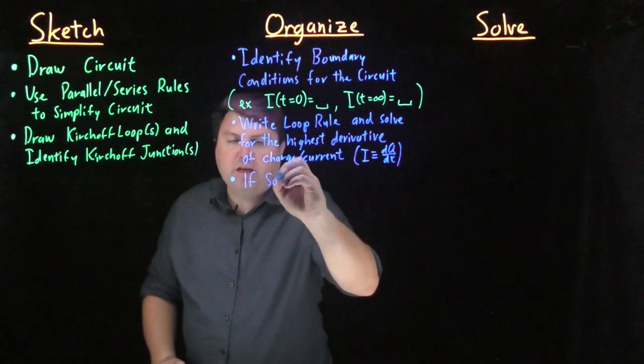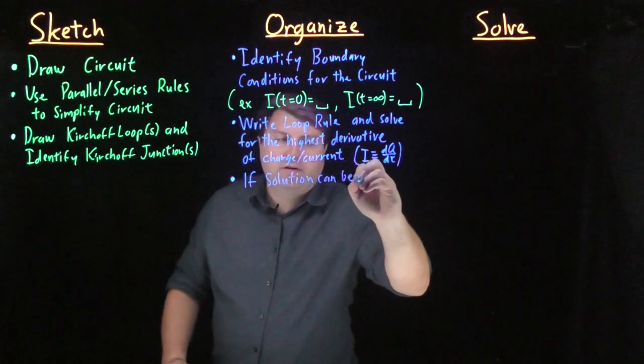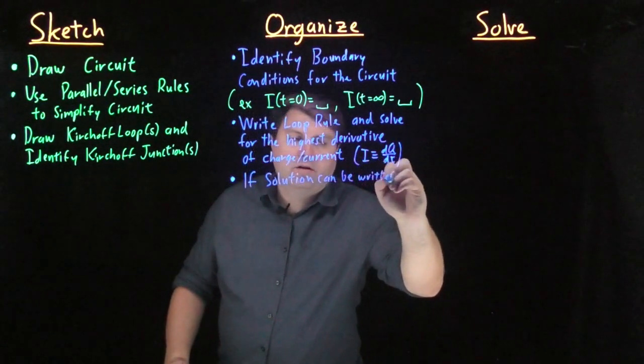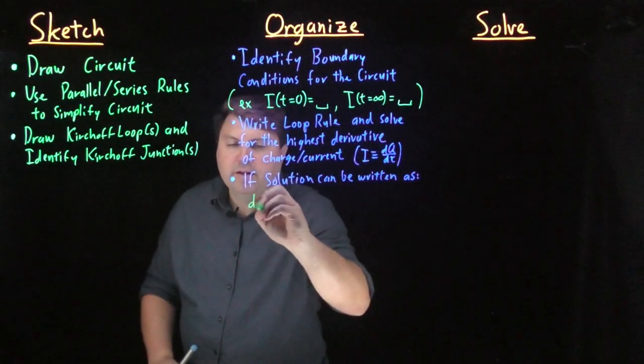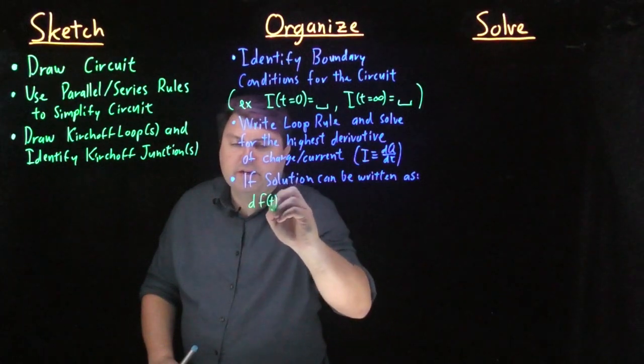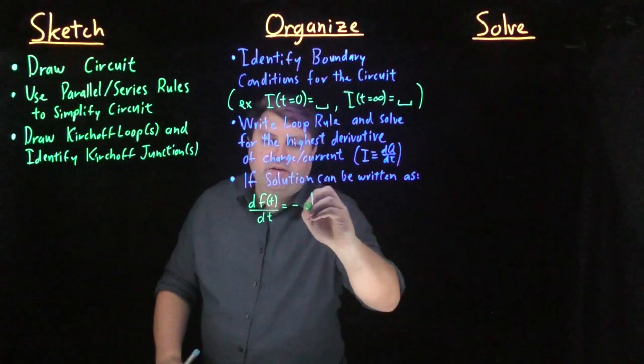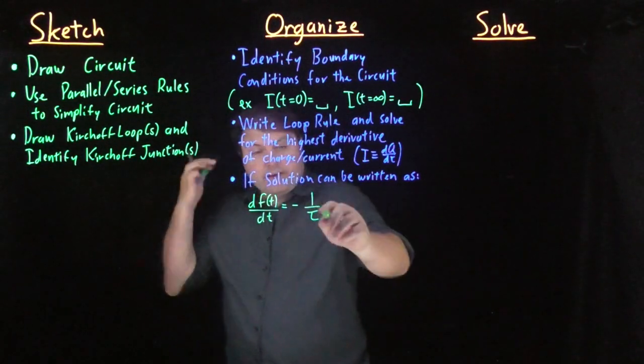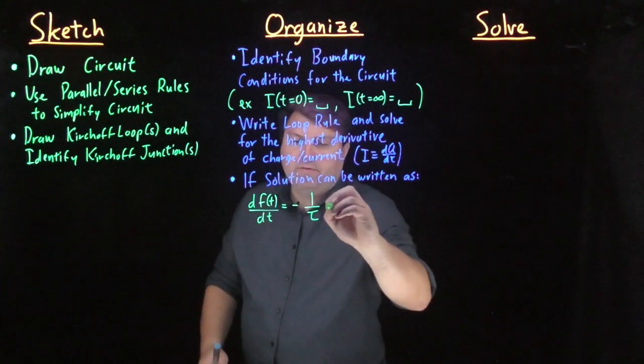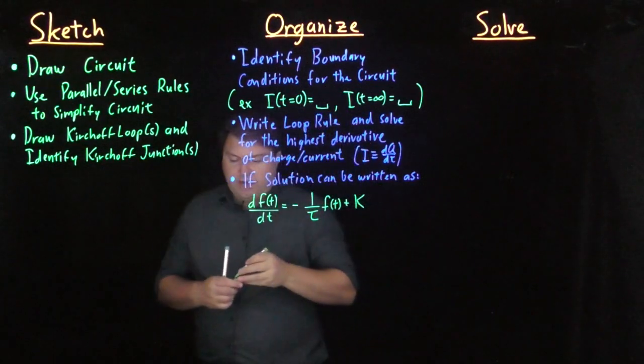So if the solution can be written as a first derivative, so by first derivative I mean the derivative of some function as a function of time, and then we have negative one over some constant tau. It doesn't have to be tau, but it has to be something in front of our function as a function of time, plus some constant k.